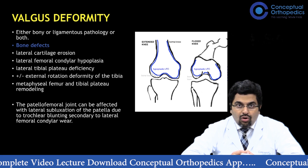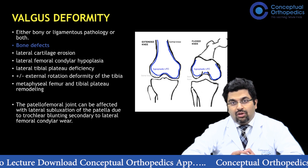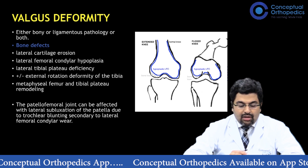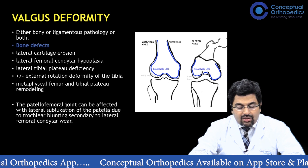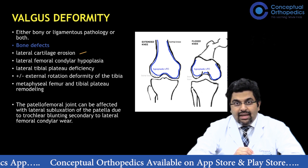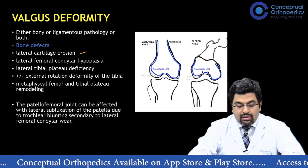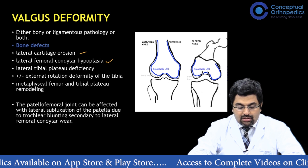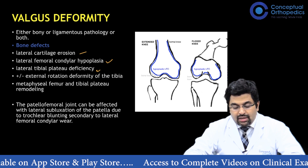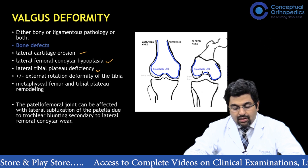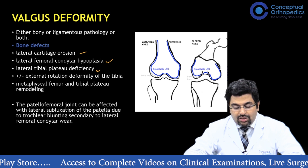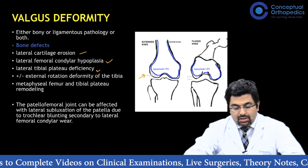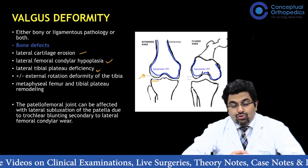In a valgus deformity, pathology can arise from two components: a bony component and a soft tissue (ligamentous) component. Among the bony defects, a valgus deformity can have lateral cartilage erosion, lateral femoral condylar hypoplasia, and lateral tibial plateau deficiency. As seen in the diagram, there can be a hypoplastic lateral femoral condyle with cartilage erosion and a lateral tibial plateau deficiency.